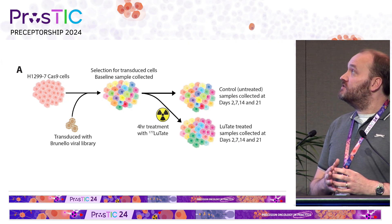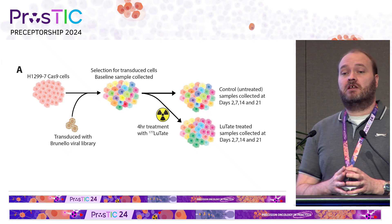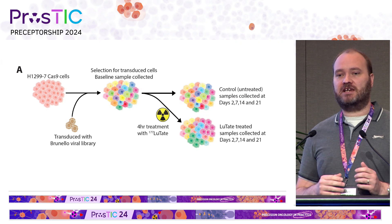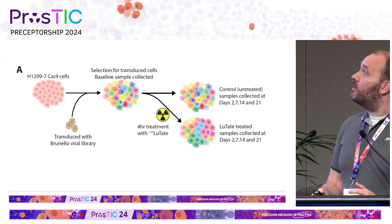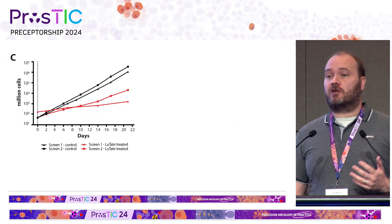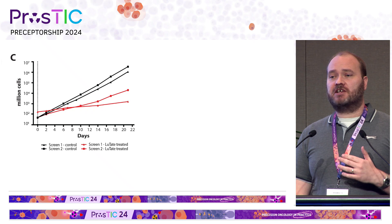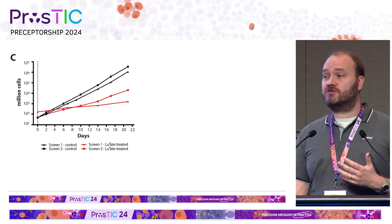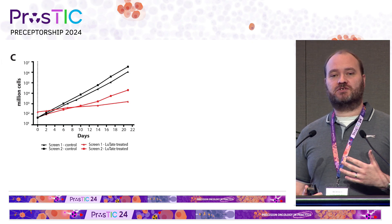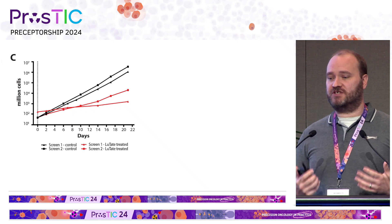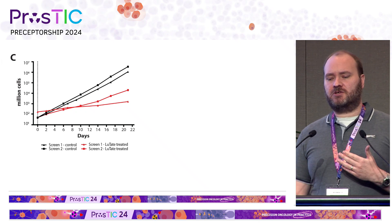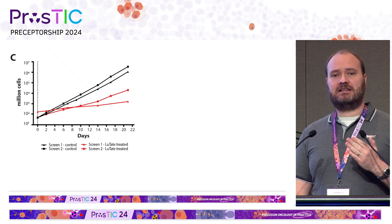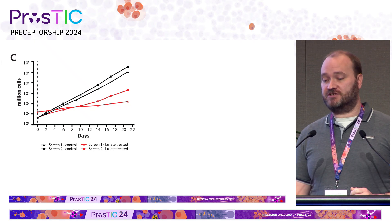We expose the cell population for four hours to lutetate, then they're washed and cultured for a period of time, and we track what happens to each individual cell. We had to first do a lot of work to pick the right dose to expose, because if you completely wipe out the population, there are no cells left — which isn't informative. And if you don't place enough stress, most of what you're seeing are just the effects of gene knockouts on normal cell survival. So there was a lot of work that went into picking the right dose, where we get a significant restriction of the population under stress but can still see genes that both increase or decrease survival.